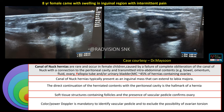Canal of Nuck hernias are rare and occur in female children — this is due to failure of obliteration of the Canal of Nuck. A direct connection of the herniated contents with the peritoneal cavity is the hallmark of this hernia. Contents can be bowel, omentum, fallopian tube, or urinary bladder, but most commonly ovaries. Whenever ovaries are identified, use color Doppler or power Doppler with adequate PRF settings to rule out ovarian torsion, as ovaries in Canal of Nuck hernias are more prone to torsion. Thanks to Dr. Maysoon for contributing this case.